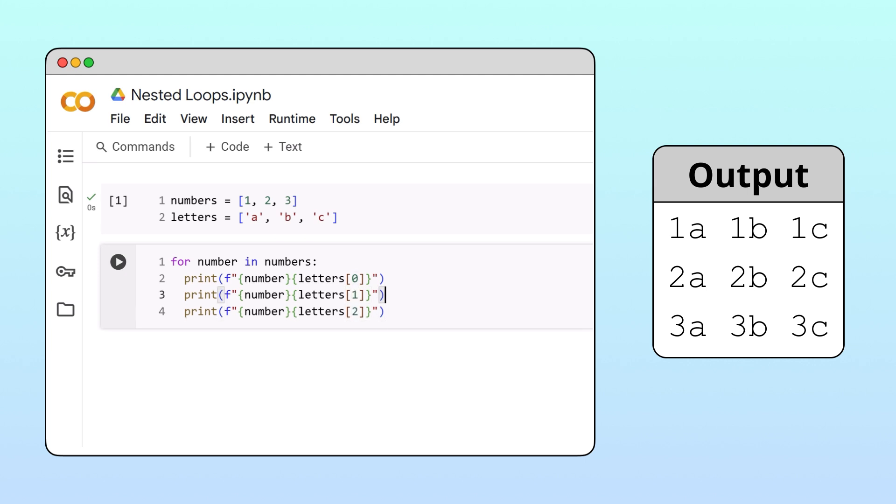To print these entries on the same row, we'll use the n equals space argument in the print function. This argument tells Python to insert an empty space after each print statement instead of a new line. This allows us to create a row of values.